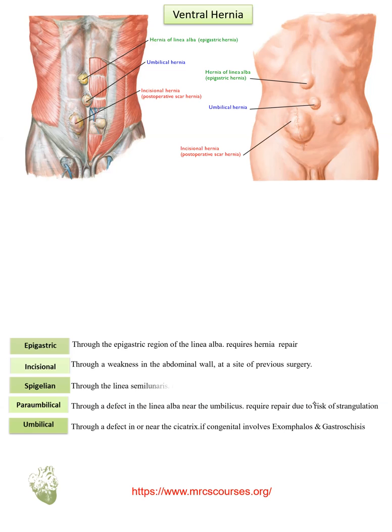Spigelian hernia occurs at the linea semilunaris, which is the lateral margin of the rectus muscle. From outside it appears like this, and it will require repair due to the risk of strangulation.